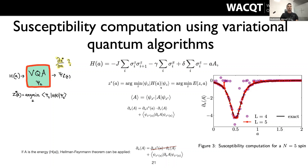Interestingly, for the special case where the property is the ground state energy itself, the Hellmann-Feynman theorem says the extra term vanishes — you only need the expectation value of the derivative of the operator with respect to 'a'. But for any other property, this theorem doesn't apply and you need the full implicit gradient term. This simple trick gives you something beyond the Hellmann-Feynman theorem.